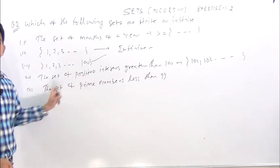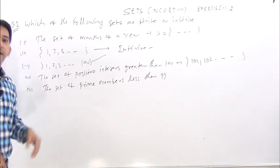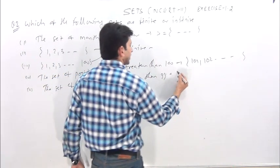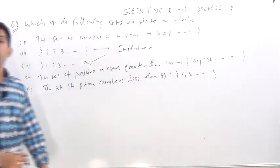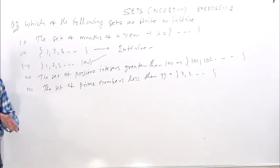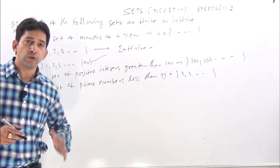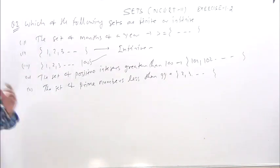Less than 99, so you know it starts 2, 3, up to 99, so it will end. So which set can be finite, which set cannot be infinite?